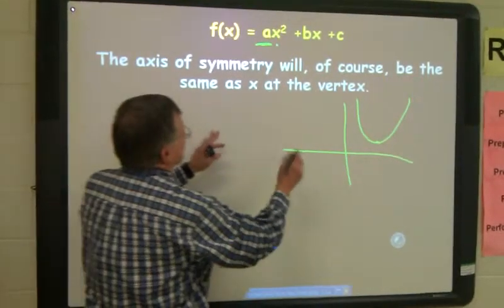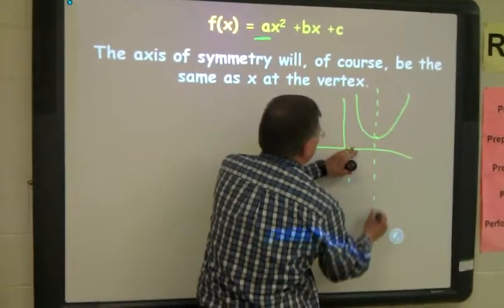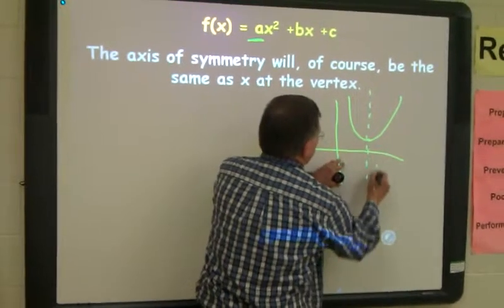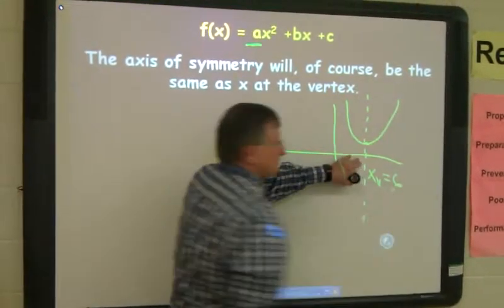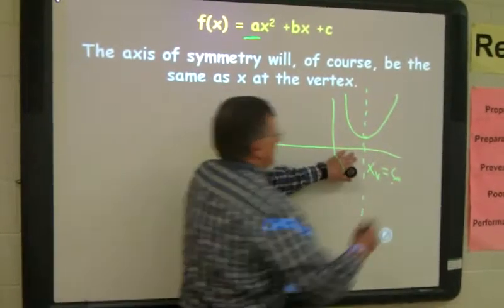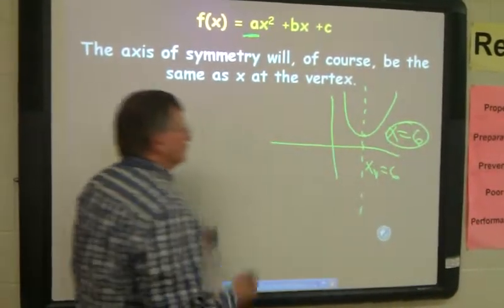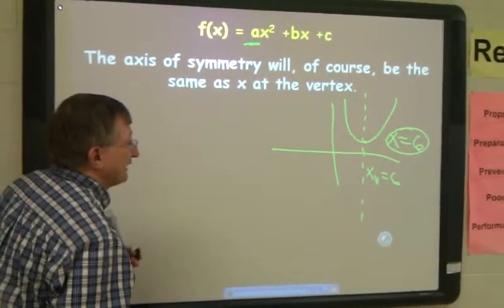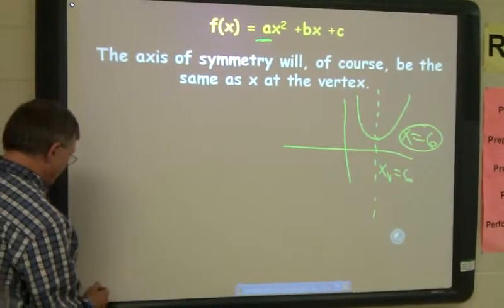And the axis of symmetry will come right down through here, right through the vertex. So if x, for example, is 6 here at this vertex, the axis of symmetry is x equals 6. It goes through the vertex every time. So the axis of symmetry and the vertex are always going to be the same.